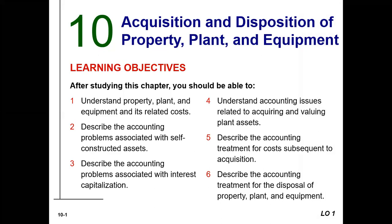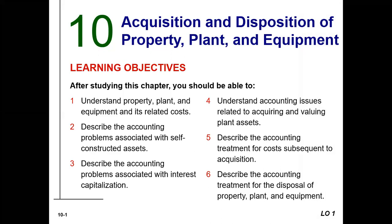Again, PPE or property, plant and equipment — also known as plant assets or fixed assets. We're going to talk about property, plant and equipment, and look at the accounting issues associated with self-constructed assets, interest capitalization, acquiring assets, and disposing of assets. That's what we're looking at in Chapter 10, and then Chapter 11 continues on talking about plant assets, where we learn depreciation.